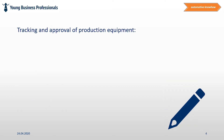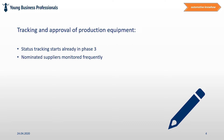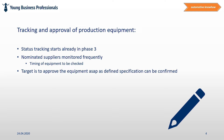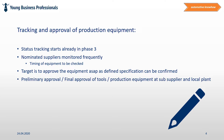Tracking and approval of production equipment. The status tracking process is of course already started in Phase 3 of the project, but it is continued in Phase 4 as well. Nominated suppliers are monitored frequently in order to check the timing status of the production equipment. The target is to approve the equipment as soon as possible once the requirements given in specification sheets can be proven. Often a preliminary approval of the equipment happens at the supplier's location, with a final approval in the production plant taking place later.